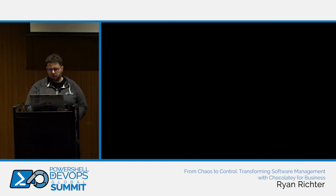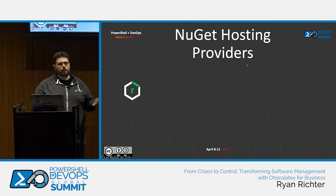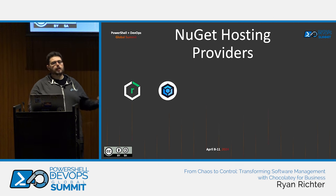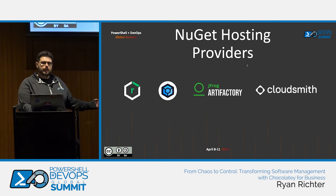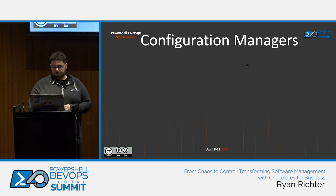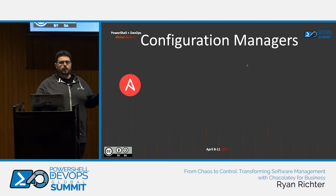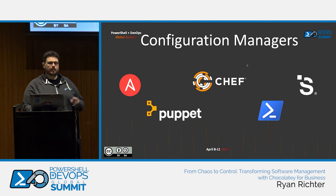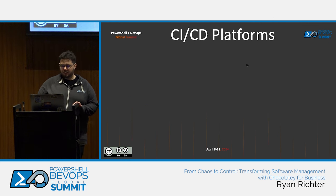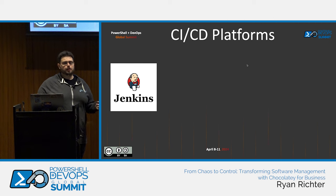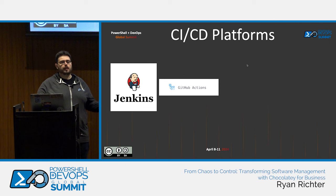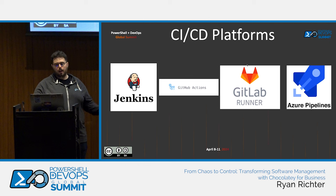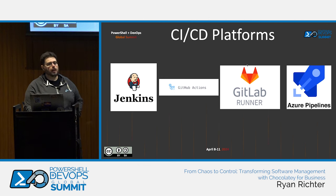I want to talk quickly about some of the tools we integrate with in a marketplace setting. Sonatype Nexus, as you saw, has an open source and paid-for product. Inedo ProGet is another one with open source as well as paid-for versions. JFrog Artifactory comes with a big cost, I'll be honest. If you're looking for a cloud-native solution, CloudSmith is out there and it's really nice. Configuration managers: we integrate with Ansible, Puppet, Chef, PowerShell DSC, and SaltStack — there are a few more but they're very niche. CI/CD platforms: obviously you saw us give you an open source Jenkins. Anything that can execute a PowerShell script on a licensed Chocolatey box can run that process — you can put it inside of a GitHub Action, GitLab Runner, Azure DevOps Pipeline, or CircleCI.